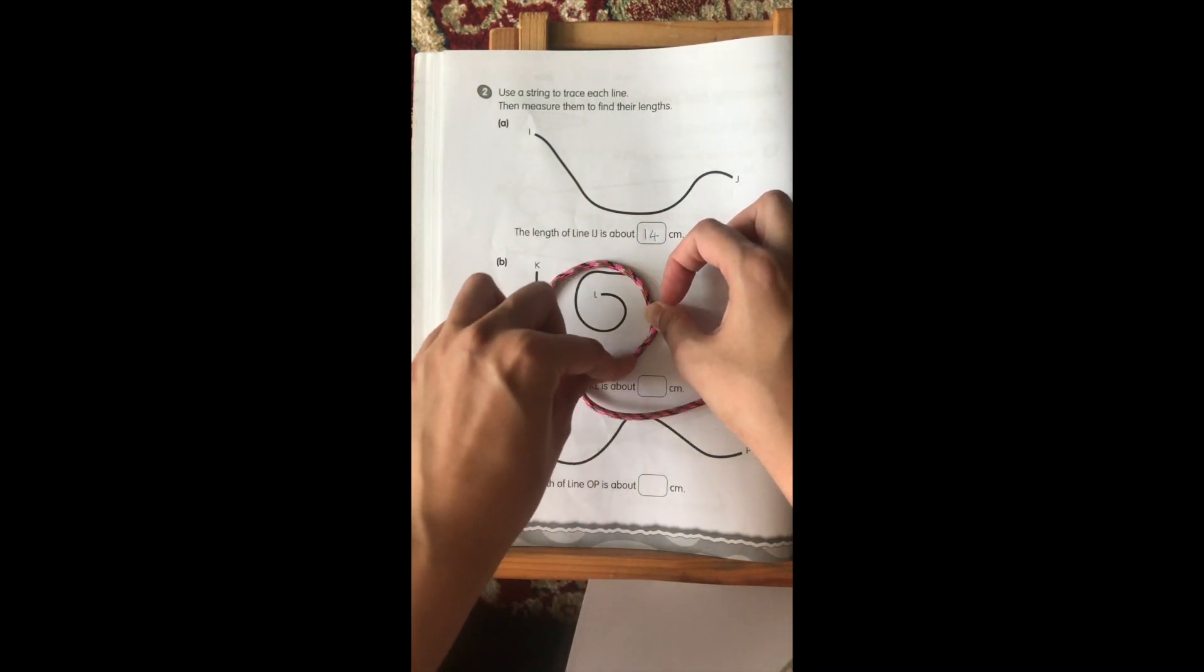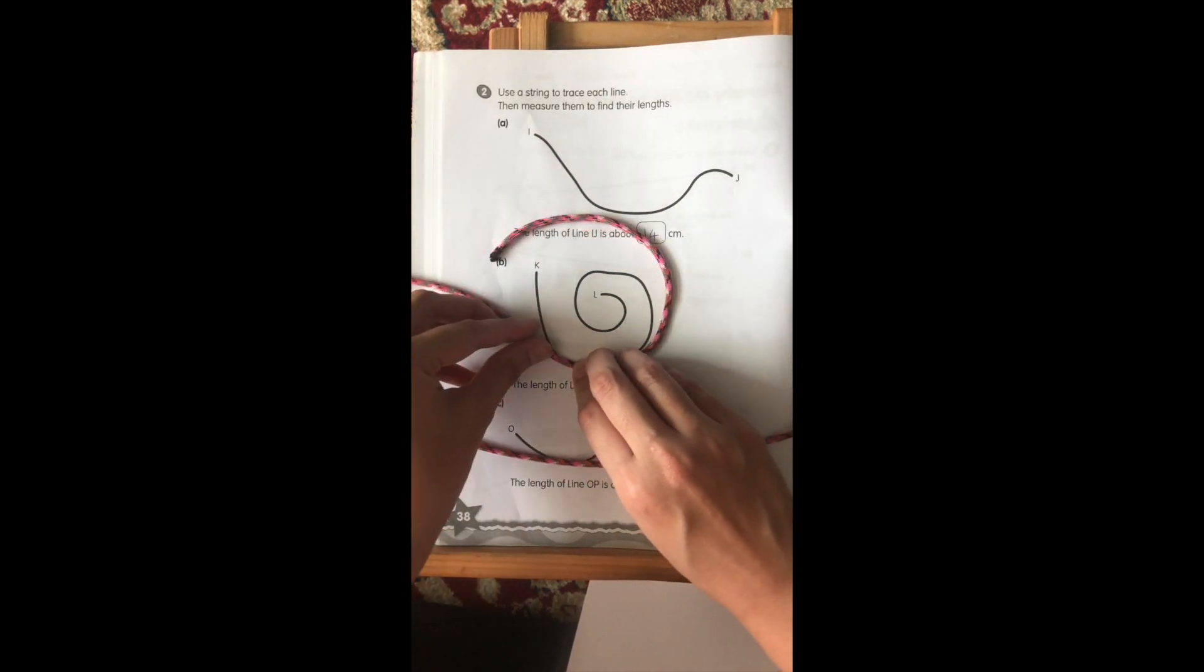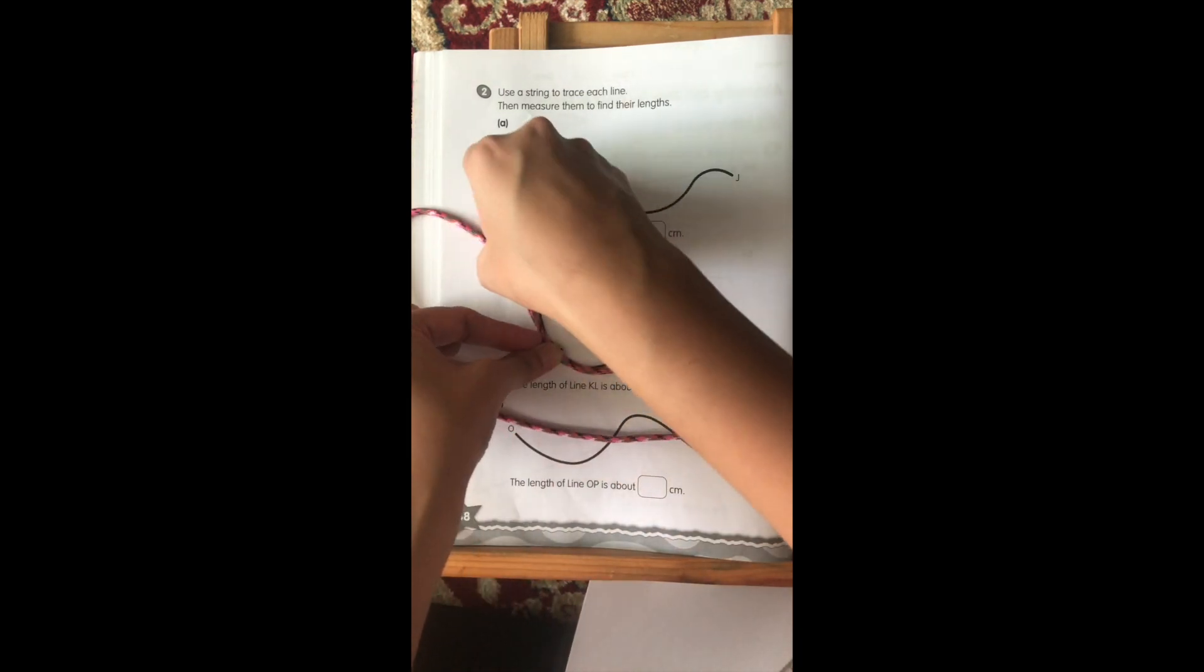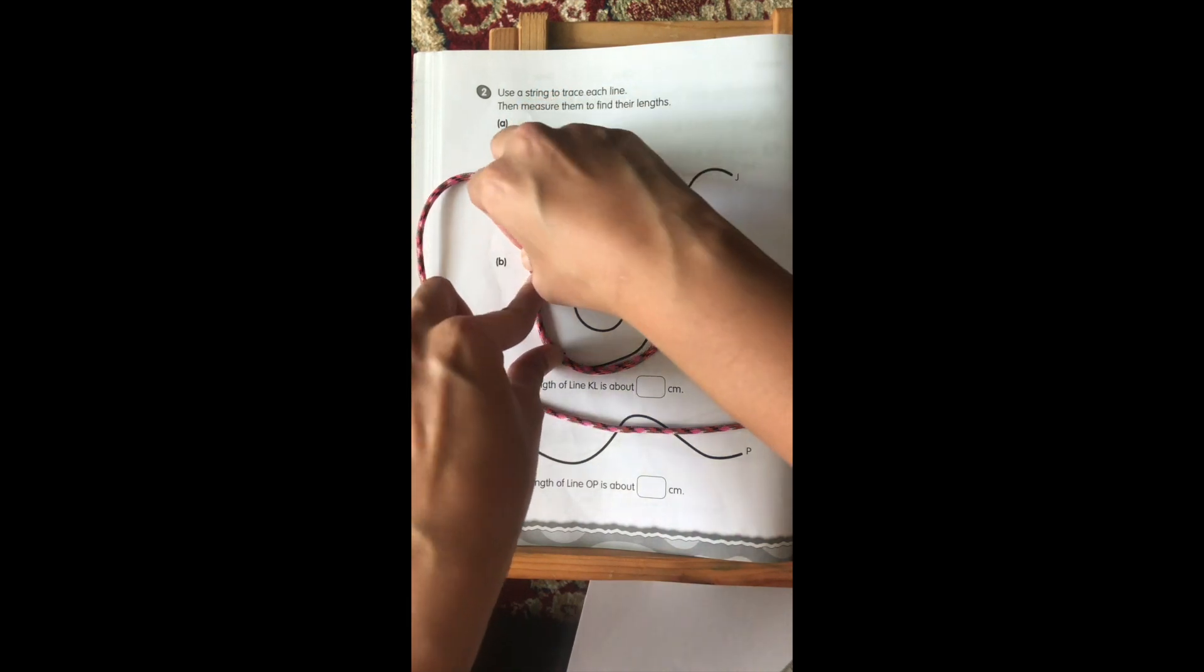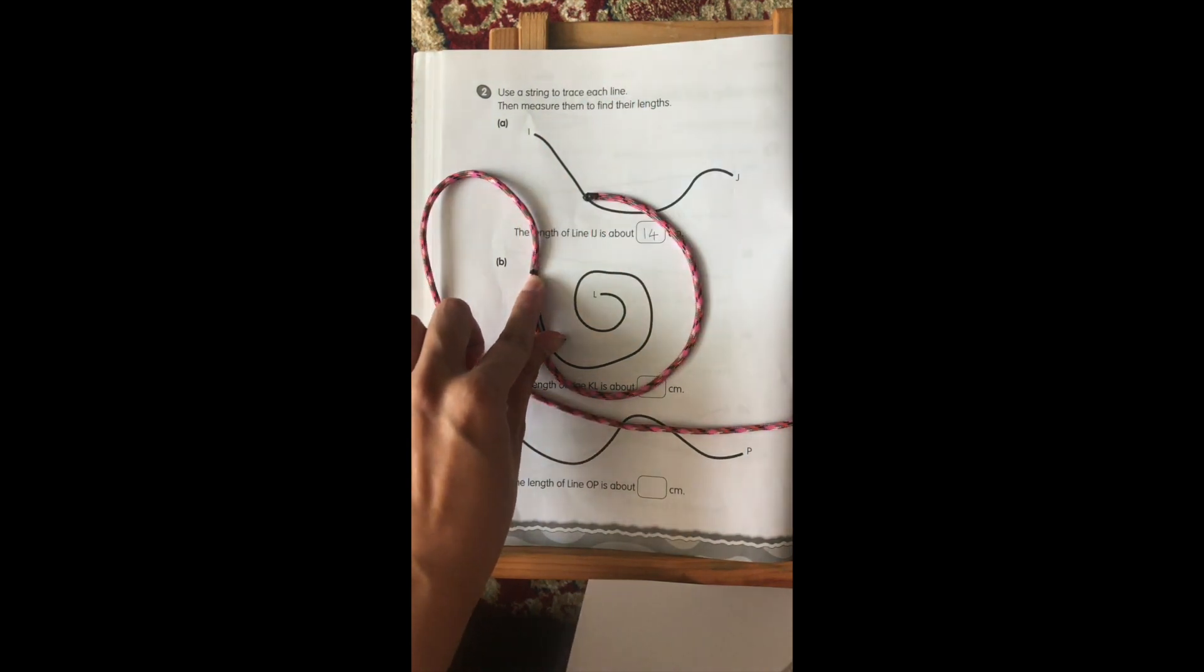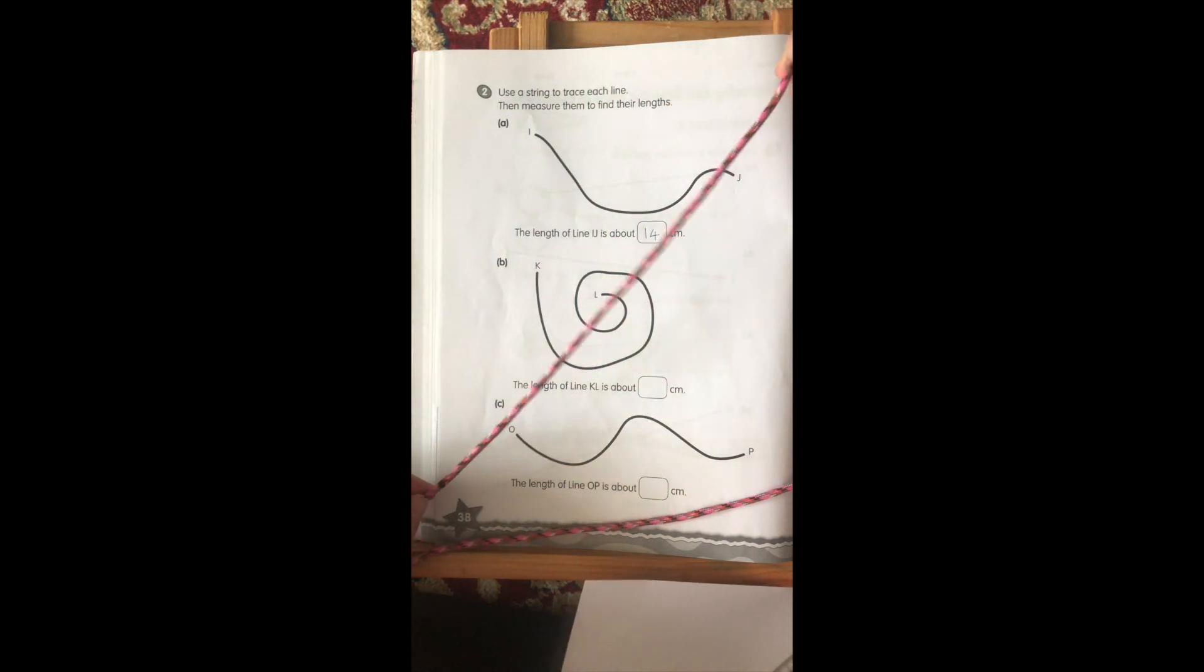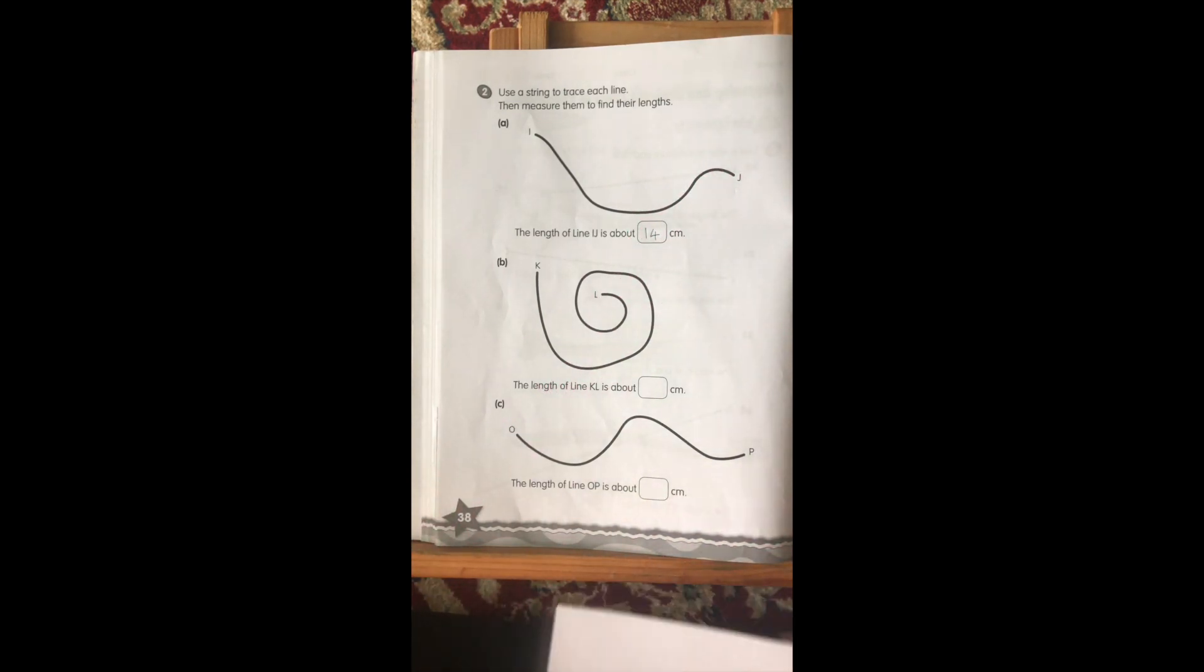So, again, I'm measuring this. Wow! It's a very, very long rope. And until the end where K is. So, again, I take my marker and I draw a line. So, I'm able to see my two marks. One at the end here, and the other one is over here. So, again, using your ruler.